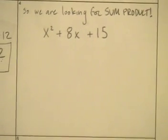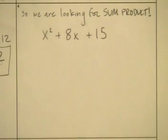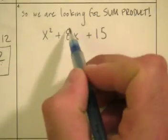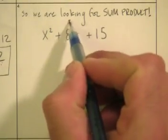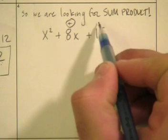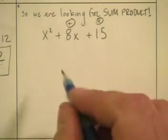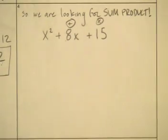What we're doing is looking for a product — what two numbers add up to the middle coefficient but multiply to the constant? Here's our sum; here's our product. I could start listing out what numbers add up to 8. Let's think of all the pairs that add to 8.